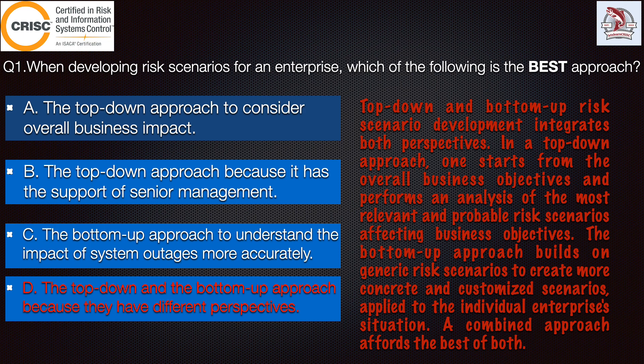Let's discuss the other options which are incorrect. Option A — the top-down approach to consider overall business impact — is incorrect because while business impact is important and IT risk must be measured relative to the associated business practices, an exclusive assessment from the business objective will lack detail grounded in the daily processes.